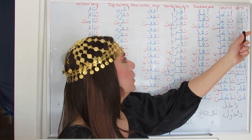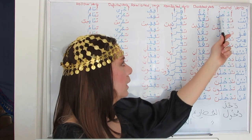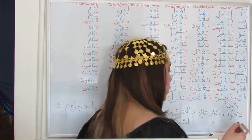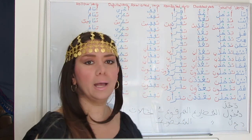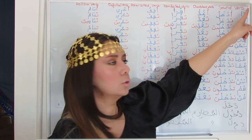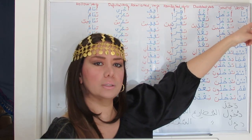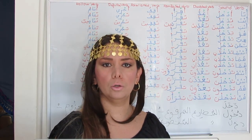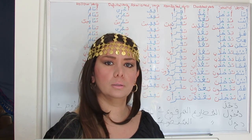For 'ana,' the form is 'adkhalu.' The stem is 'dakhala,' with three radicals: Dal, Kha, Lam. For 'ana,' we borrow the Hamza — an Alif with Fathah — and use it as a prefix to conjugate the verb in the present tense for the first person singular.